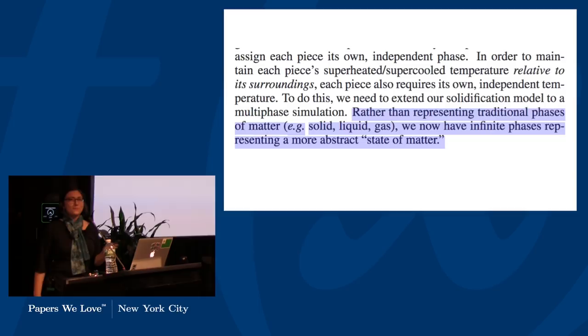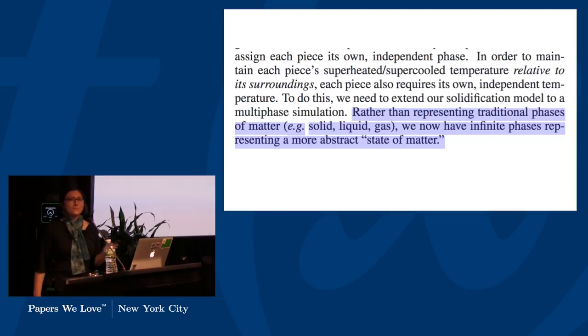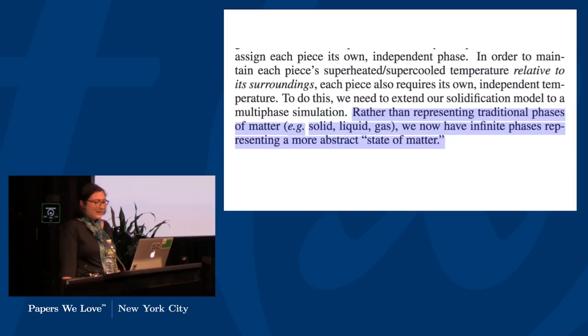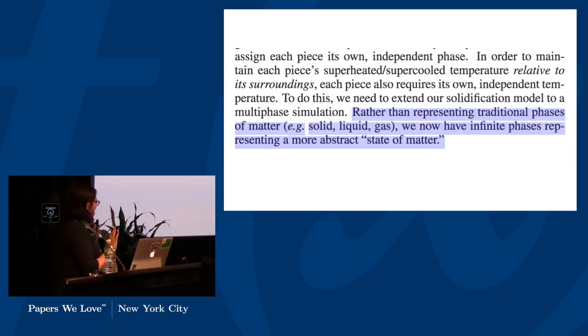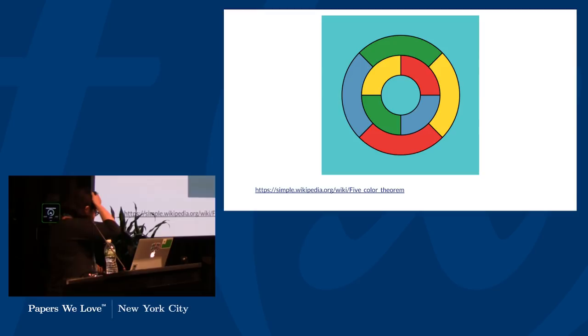This is my favorite part of the paper. They take that observation, and they say, oh, this is easy. We just need an infinite number of states of matter. Like that's definitely the obvious approach, infinite states of matter. I love it. So if they assign each piece its own phase of matter, every piece will be superheated and supercooled relative to the ones that are next to it. This is the point at which I'm just trusting the authors when they say that they update their equations to handle infinite states of matter.